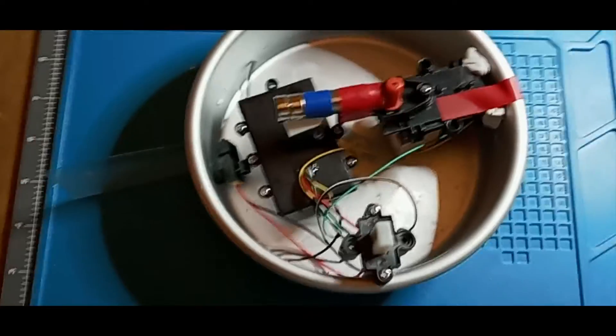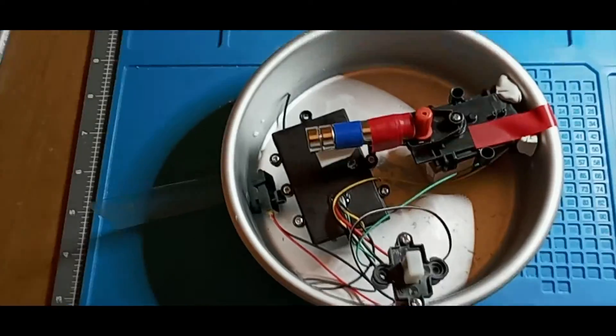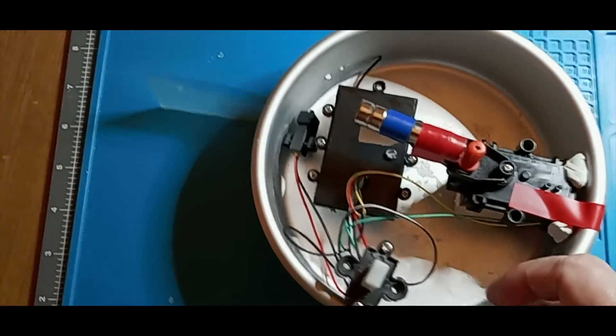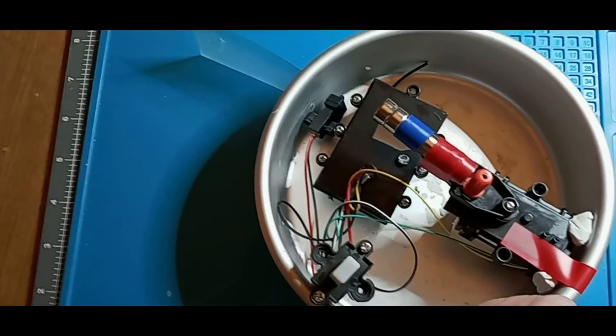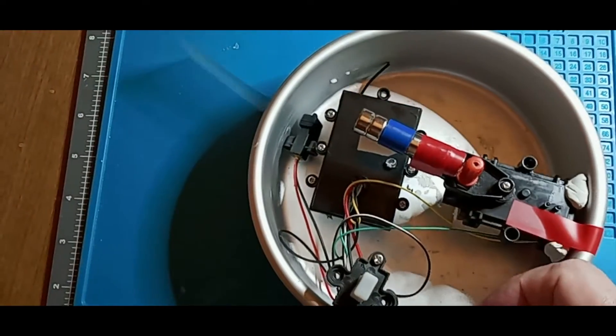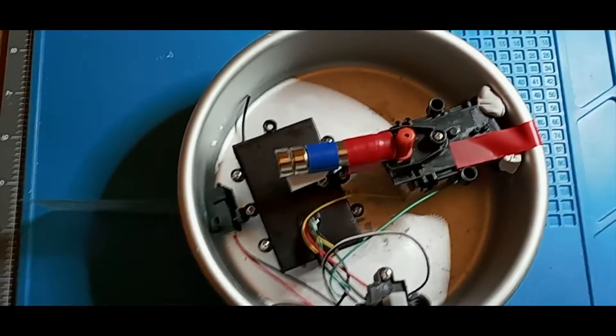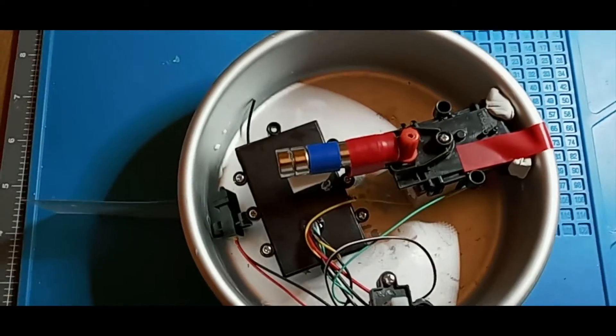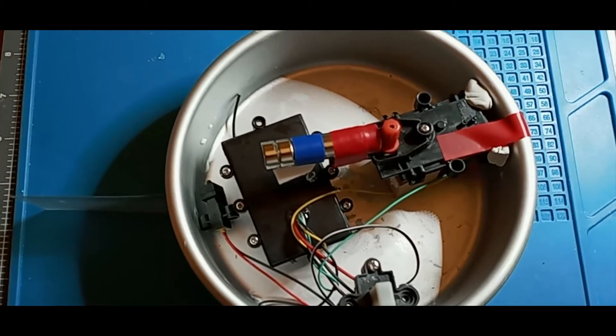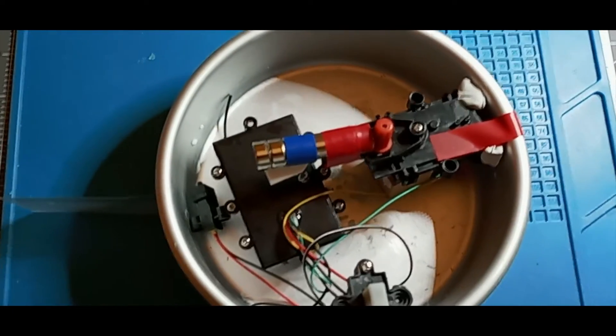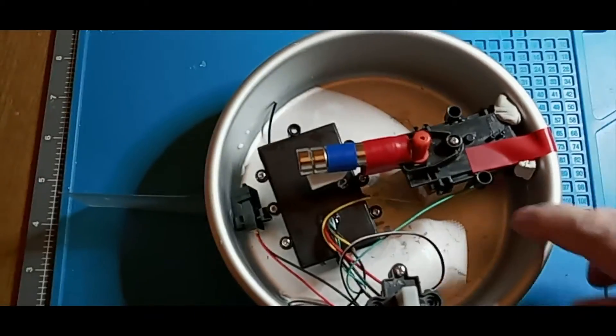This entire boat weighs about four and a half ounces. Well, actually the aluminum pan version weighs about 10 or 11 ounces, but the workings of the boat without the aluminum pan is only about four ounces.